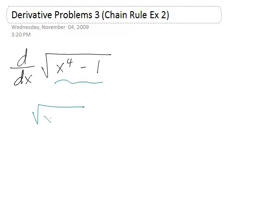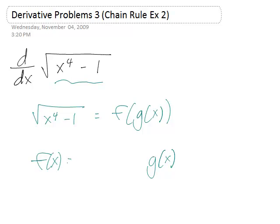That means we want to write the square root of x to the 4th minus 1 as f of g of x, and so we need to identify f and g. The outermost layer, the last thing you do to your variable, is to take the square root, so f is square root of x, and g is everything else, so it's just x to the 4th minus 1.